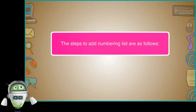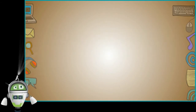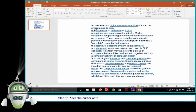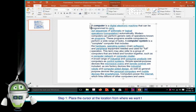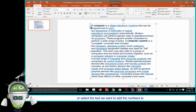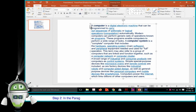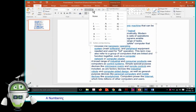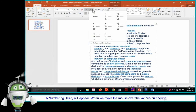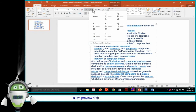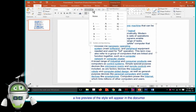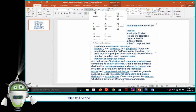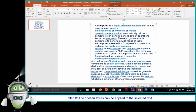The steps to add a numbering list are: Step 1 — Place the cursor at the location from where we want to add numbers, or select the text we want to add the numbers to. Step 2 — In the Paragraph group, click on the drop-down list of the Numbering options. A numbering library will appear; when we move the mouse over the various numbering styles, a live preview will appear. Step 3 — The chosen style will be applied to the selected text.